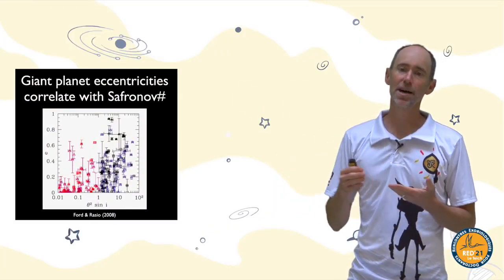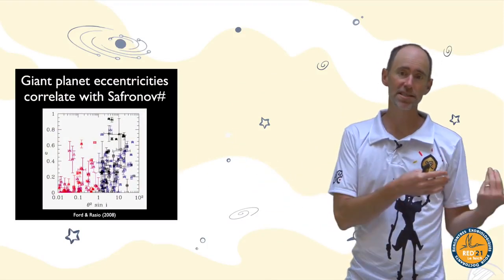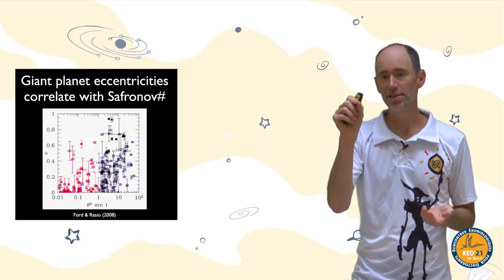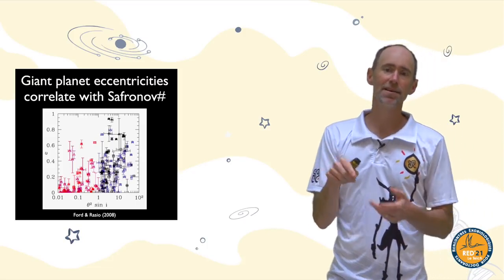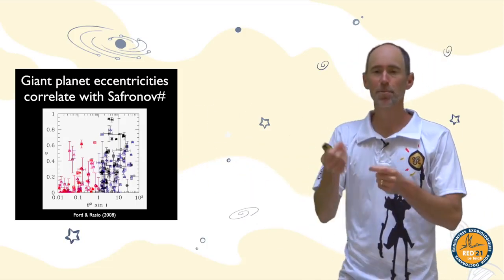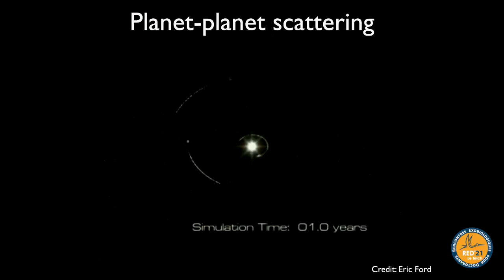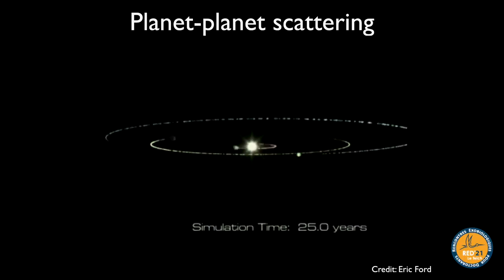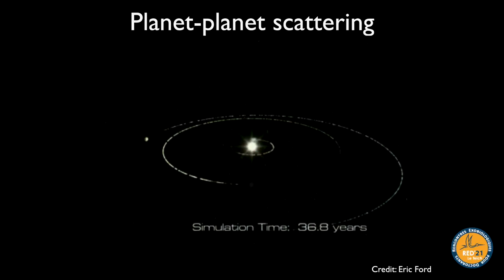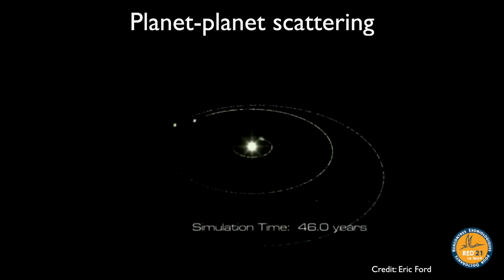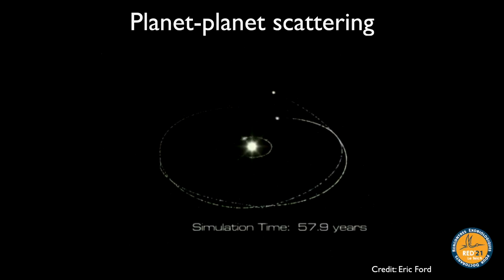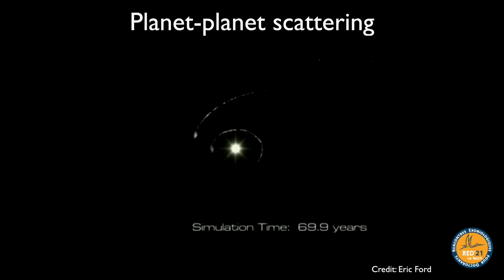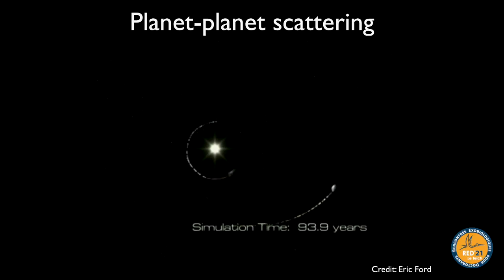This goes in the right direction — scattering dominates for high Safronov number planets. It's imperfect because what really matters is the Safronov number when the action happened, not afterwards, but the general idea holds. This animation by Eric Ford shows the dynamics: orbits gradually change shape and eventually cross, leading to multiple scatterings and then one final strong gravitational kick that ejects a planet, with the survivors having stretched eccentric orbits as scars of this violent instability.